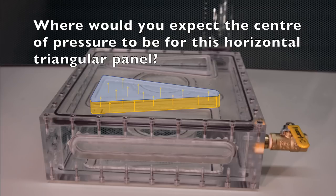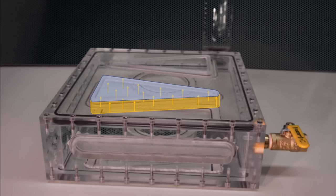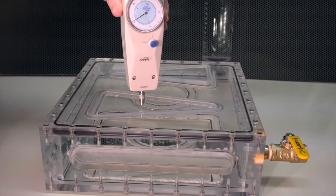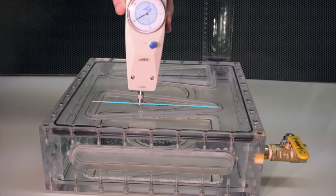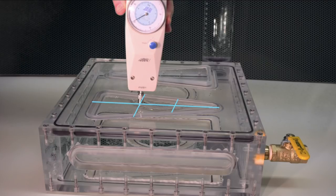Where would you expect the center of pressure to be for this horizontal triangular panel? It would lie along the triangle center line, and would be one third of the distance from the triangle base towards its apex. Was your answer correct?